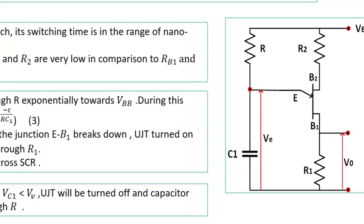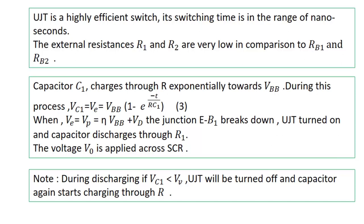Let's discuss some basic points about UJT. UJT is a highly efficient switch. Its switching time is in the range of nanoseconds. In case of SCR, we know that once the SCR is on, it will remain on. So we have to break the junction to turn on the SCR, and for that, a pulse is required.